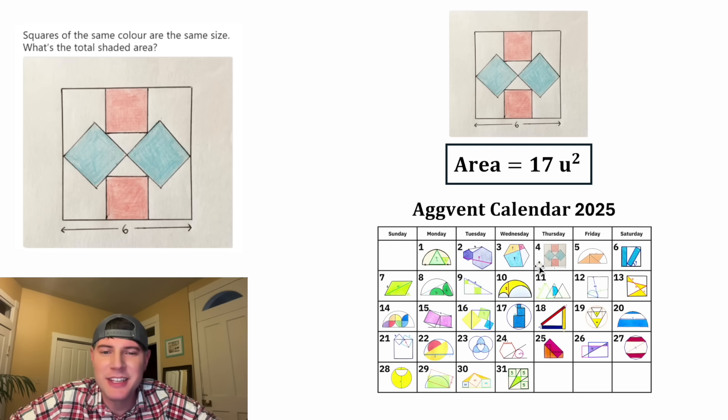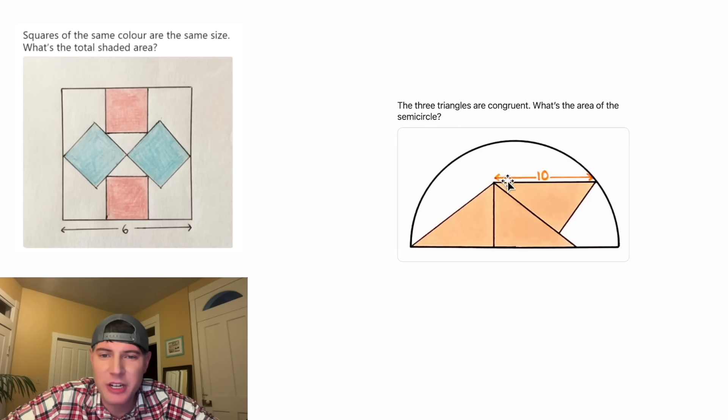How exciting. This is day four of our 2025 AgVent calendar. And here's day five. We're given three congruent triangles inside of a semicircle. And they each have a hypotenuse of 10. And it wants to know what is the area of the semicircle. This looks like a fun one. How exciting.